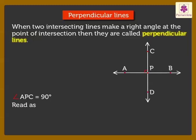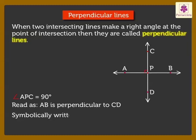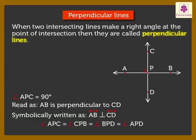It is read as AB is perpendicular to CD. Look here, all four angles at the point of intersection P are right angles.